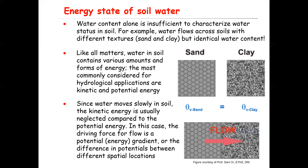For example, consider a sandy media and a clay media and assume they have the same water content, say 15%. If you put these two layers next to each other, you will have a flow of water from one side to the other. That suggests that although the water content was the same, something else was different in the water residing in these two media, causing the flow from one side to the other.